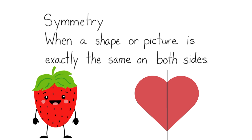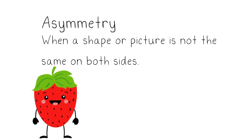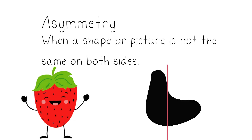If I folded it like a piece of paper on that middle line, it would fold perfectly onto each other. Asymmetry is when a shape or a picture is not the same on both sides. When we look at this organic shape and I draw a line down the middle, we can see that both sides are not the same.